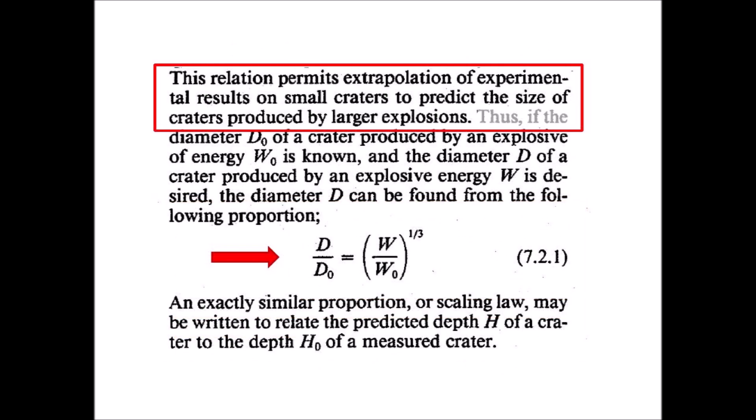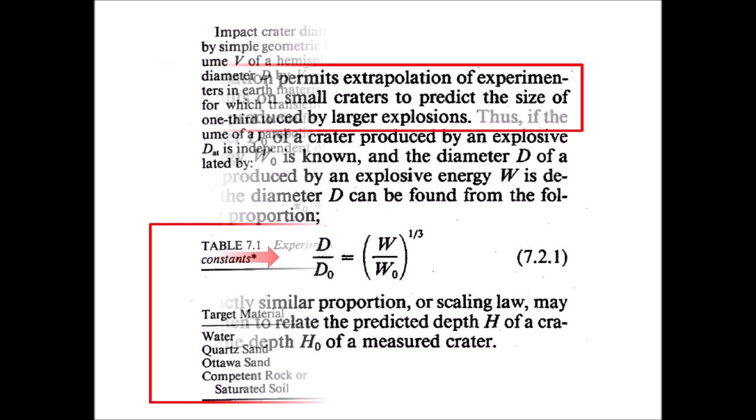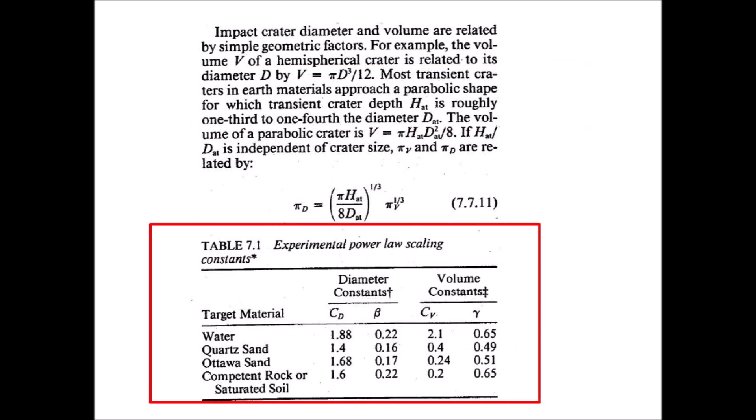The relationship between crater diameter and the cube root of the explosive energy permits extrapolation of experimental results on small craters to predict the size of craters produced by larger explosions. The results can be generalized for different types of target materials so that it is possible to deduce the depth, volume, and diameter of a crater from the energy of the explosion. These constants are integrated in the Melosh-Bayer program that calculates projectile size from crater diameter.